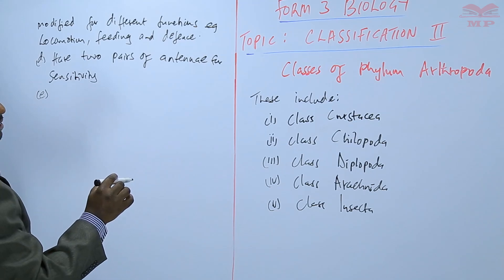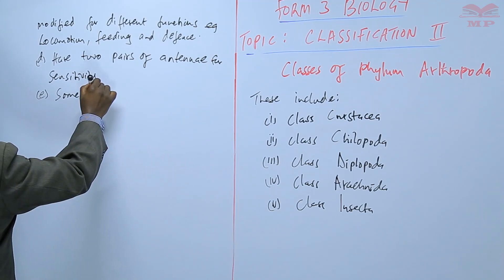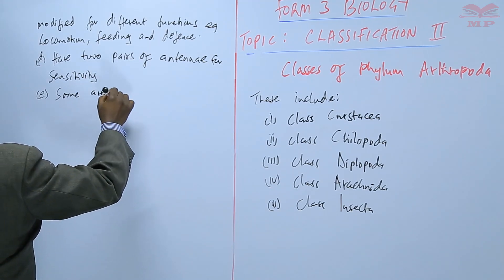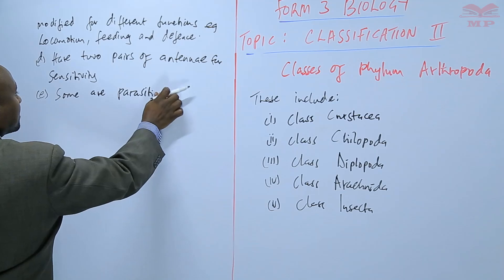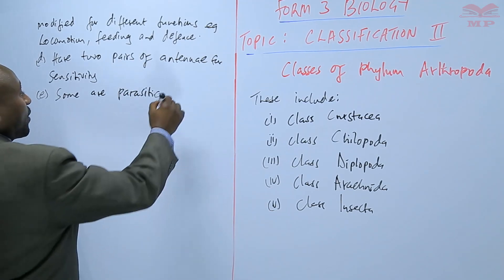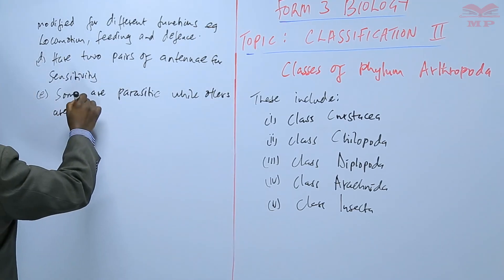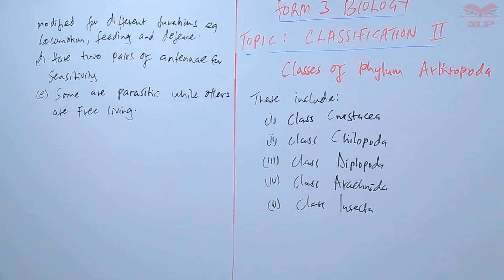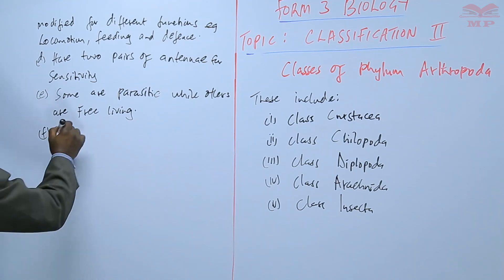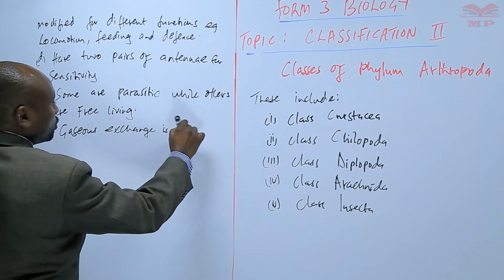Some of the crustaceans are parasitic, or they are parasites, while others are free-living. Their mode of gaseous exchange is by use of gills.